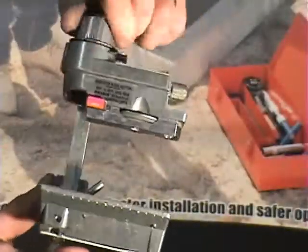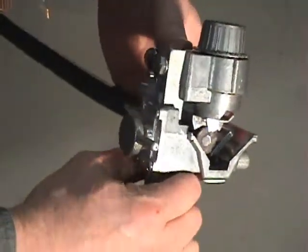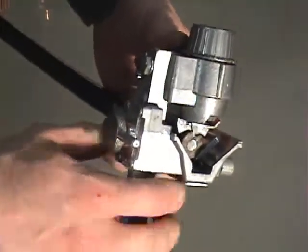Fully retract the scoring blade, move the lock lever to the insulation stripping position and extend the stripping blade. Clamp the tool to the cable end and verify the blade depth.